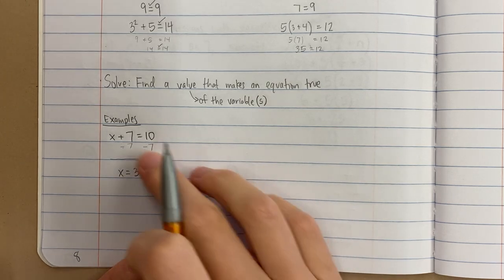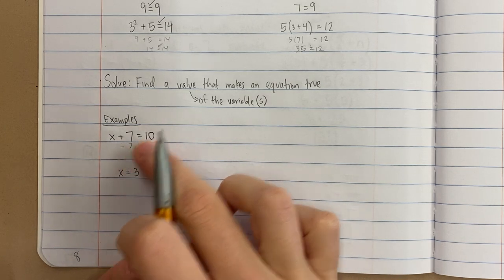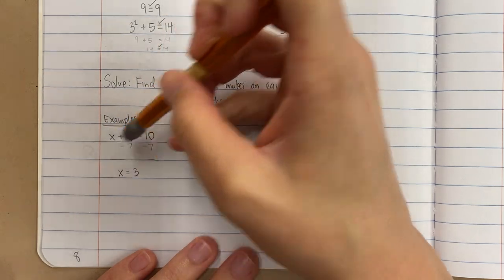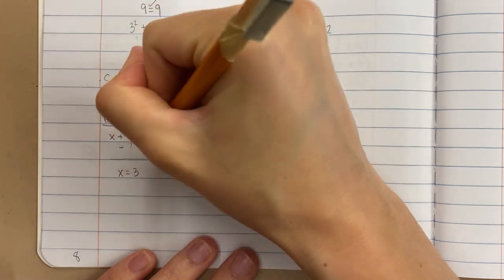x equals 3. You can kind of just do it in your head, or this is called doing inverse operations, where I have addition and I'm subtracting from both sides. You've seen this before.